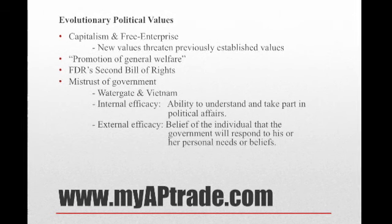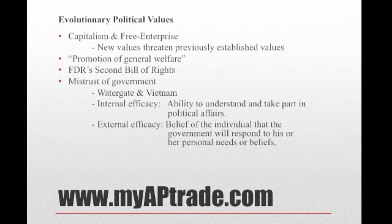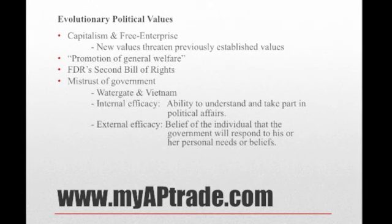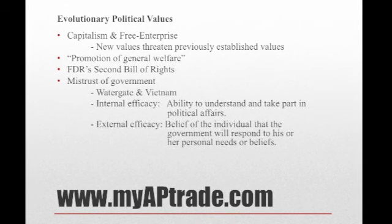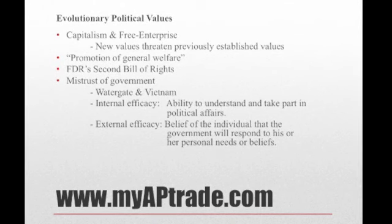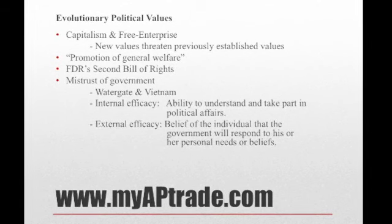Although the preamble to the Constitution states that promotion of the general welfare is a major purpose of government, the meaning of that value was really transformed during the 1930s when the Great Depression brought about the near collapse of capitalism. FDR's New Deal program was an affirmation of the government's responsibility for the welfare of the people. FDR outlined a second Bill of Rights reflecting his commitment to economic security, asserting everyone's right to a job, food, clothing, a decent home, adequate medical care, and a good education.